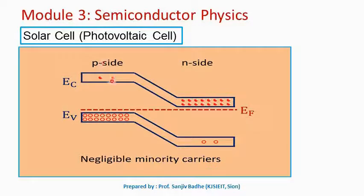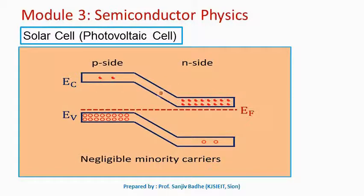Holes are the minority carriers on the n-side. On the p-side, the valence band has a large number of holes and the conduction band has very few electrons, so electrons on the p-side are minority carriers. For current to occur, electrons from the conduction band on the n-side must cross to the conduction band on the p-side, but there is an energy hill in between. Therefore, it is difficult for those electrons to cross over, and similarly, holes cannot climb down the energy hill easily.